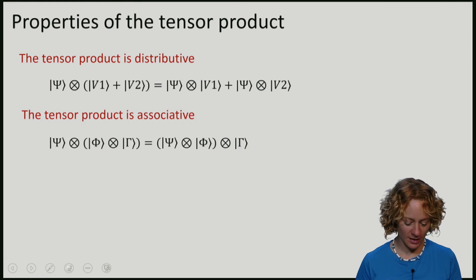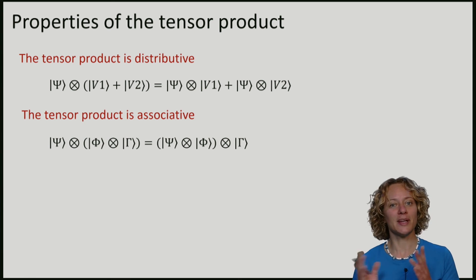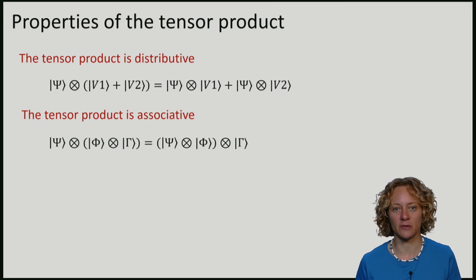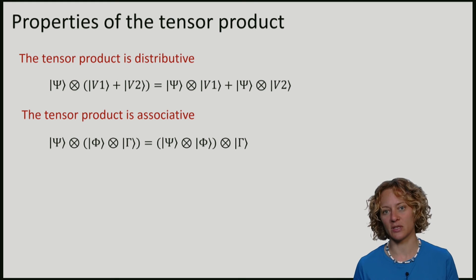The tensor product is also associative. When we tensor up many qubits it does not matter in which order we perform the operation. Whether I first tensor phi with gamma and then with psi or first psi with phi and then with gamma.